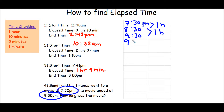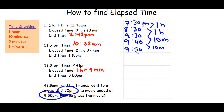9:30 plus 10 minutes gives me 9:40 — make your connection. Can I add 10 more minutes? Absolutely — I'll end up at 9:50. I can't add 10 more because I'd end up at 10:00, and we want 9:55. So let's add a 5-minute chunk, and I'll end up at 9:55 — which is what we wanted. Make your connection — 5 minutes.